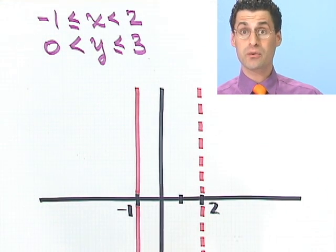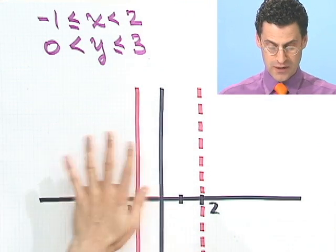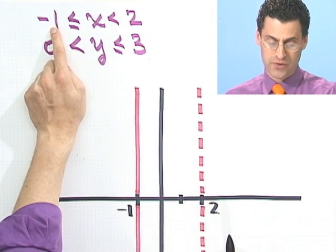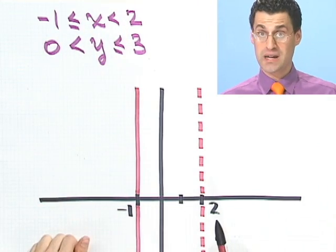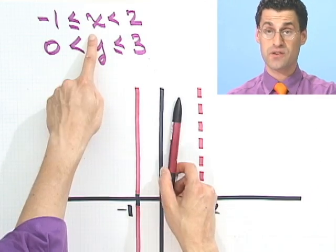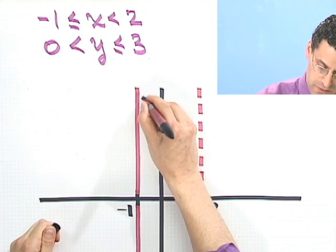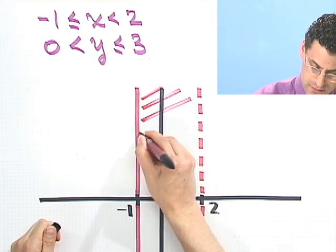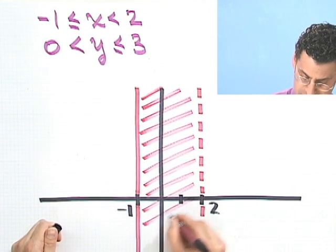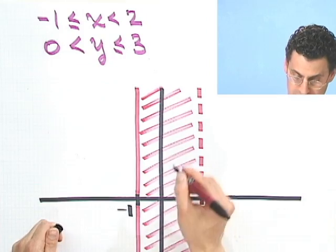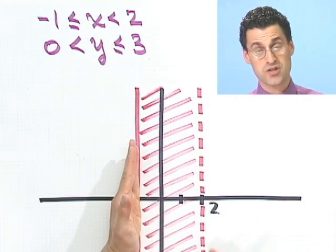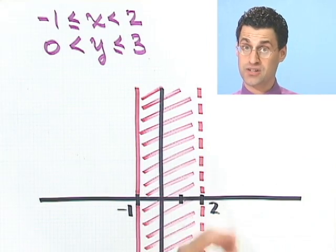I have three regions and I need to think about where to fill in. x is between negative one and two, so the x values between those two lines are the ones that satisfy this condition. I shade in those x values, meaning any y that has an x between negative one and two. I can include the solid line but I can't touch the dotted line — it has to be strictly less than two.